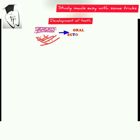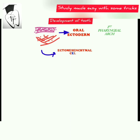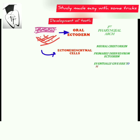Now looking at the epithelial-ectomesenchymal interaction — this is the oral ectoderm, derived from the ectoderm of the first pharyngeal arch. These are the connective tissue cells, or ectomesenchymal cells, which are of neural crest origin. They are primarily derived from the ectoderm but eventually give rise to mesenchymal tissues, which is why they are called ectomesenchymal cells. These ectomesenchymal cells induce or instruct the overlying epithelium to start tooth development.